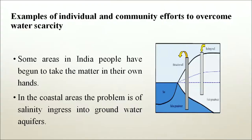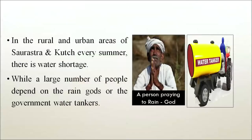There are examples of individual and community efforts on water conservation in our country. In some areas of India, people have begun to take the matter into their own hands. In coastal areas the problem is of salinity increasing in groundwater aquifers. In rural and urban areas of Saurashtra and Kutch, every summer there is water shortage, while a large number of people depend on rain or government water tankers. First we will take a case study from Gujarat.